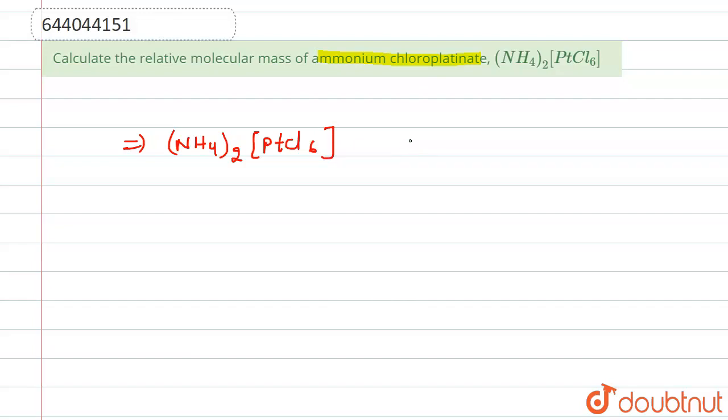Now if we talk about the molecular weight or you can say molar mass of ammonium chloroplatinate, let us see that. For nitrogen, this is two nitrogen N2, so this will be equals to 14 times 2.